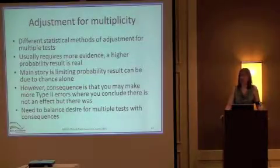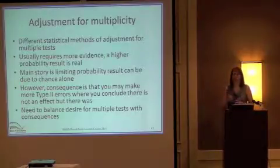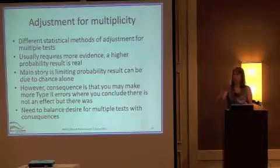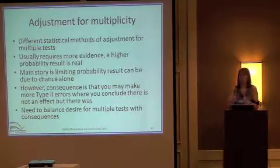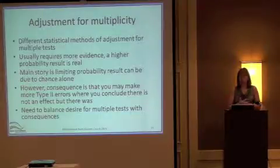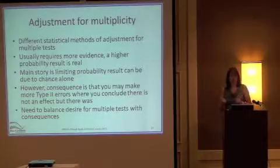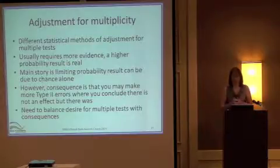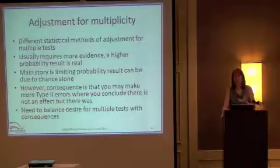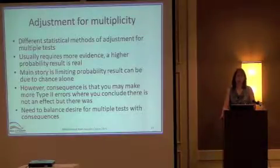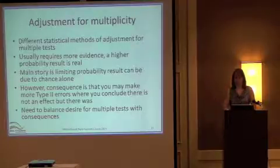There are statistical adjustment methods. In fields with multiplicity — like imaging studies with multiple regions of the brain, or genetic studies with many genes — there are methods that should be used and stated, and you should plan for them ahead of time. Usually when you have multiplicity it requires more evidence and a higher probability that the result is real, limiting the chance of a false positive. However, with any adjustment for multiplicity there are consequences — you may lose power in the study and it may result in increased sample size.